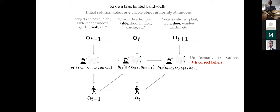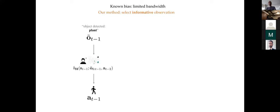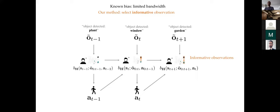The problem with the random baseline is it may end up providing uninformative observations about common objects everywhere in the house that don't really help the user figure out where they're standing. Our method instead optimizes the assistant's choice of which object to inform the user about at each time step. By telling the user about landmark objects that can only be seen from the user's current position, the assistant can induce much more accurate beliefs using fewer synthetic observations, which leads to better user actions.